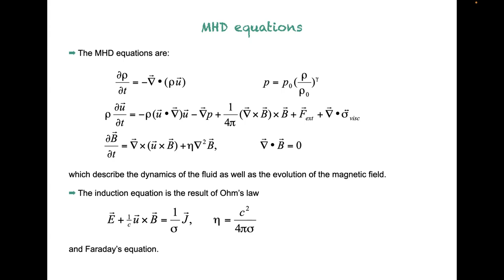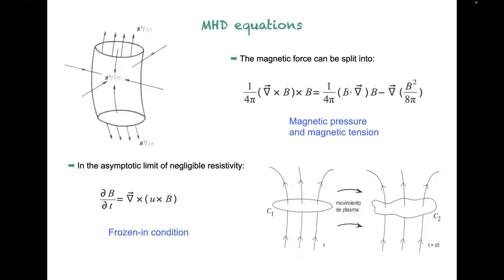Taking the curl of Ohm's law, and using the Maxwell equation that the curl of E equals minus the time derivative of B, brings you to the induction equation. The curl of the cross product gives one term, and since j equals the curl of B, the curl of j gives a Laplacian plus another term that is zero because the divergence of B is zero. That is a summary of how the induction equation follows from Ohm's law and Maxwell's equations.